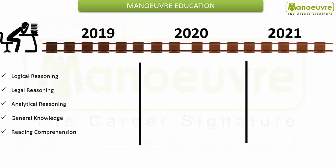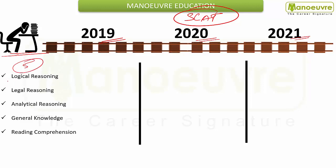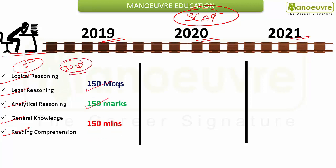Now friends, if we talk about 2019, 2020 and 2021 with respect to SLAT, there have been a lot of changes in paper pattern. Section-wise, the sections were quite similar — sections remained as they were. In 2019 there were 5 sections: logical reasoning, legal reasoning, analytical reasoning, general knowledge, and reading comprehension, with 30 questions from each section. The paper pattern was 150 MCQs for 150 marks and the time duration was 150 minutes.